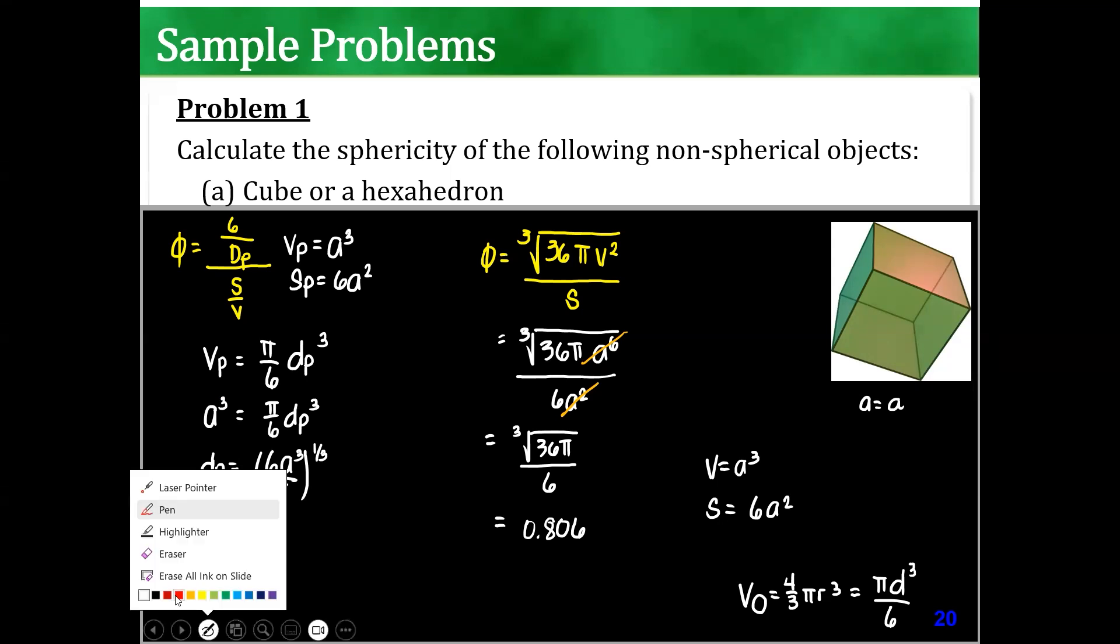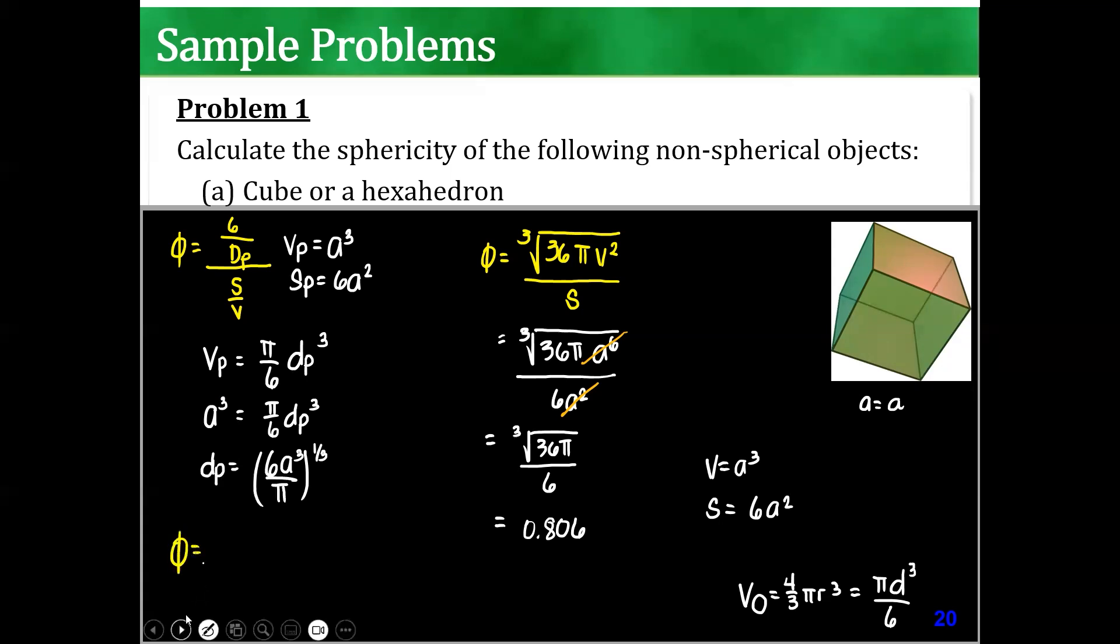In order to solve, guys, for the sphericity, we know that, 6 over dp. 6 over dp. Our dp is 6a cube over pi to the 1 third. That's like the equivalent particle diameter if it's a sphere. Times the v divided by the top. It becomes a cube over 6a squared.